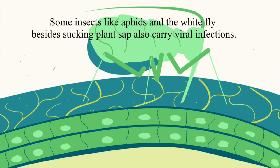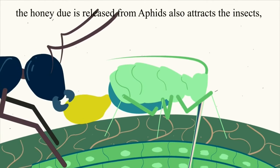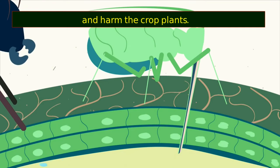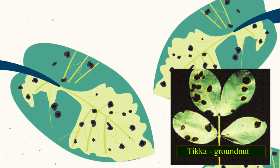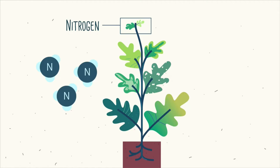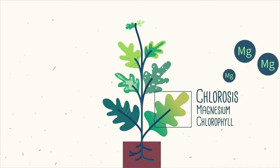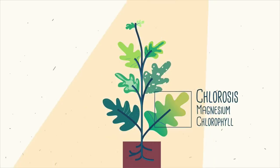Fungal diseases include black spot fungal disease; symptoms of tikka disease of groundnuts can be observed. Nitrogen is important for the growth and maintenance of plants. Chlorosis occurs due to deficiency of magnesium, which is the key element in chlorophyll. Rice crops are attacked by many diseases and disease-causing agents, including green insects and other pathogens. By summer plowing, some harmful microorganisms and insect eggs come out and die due to sun rays.